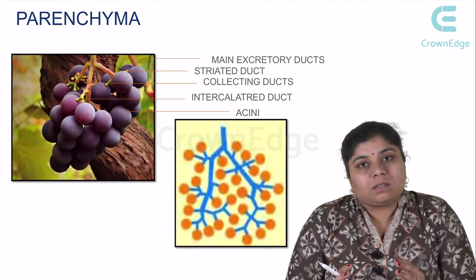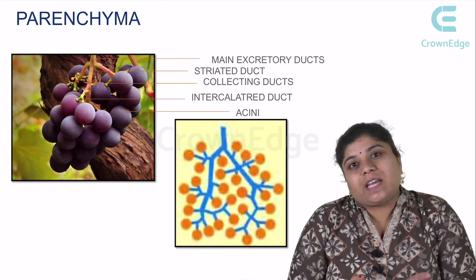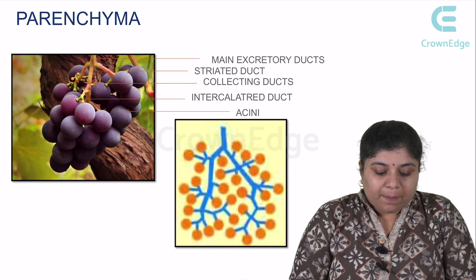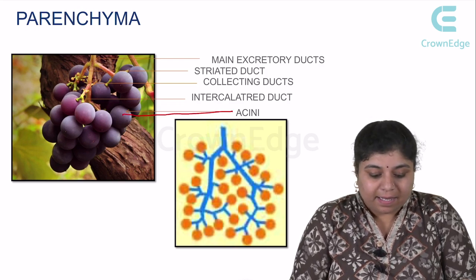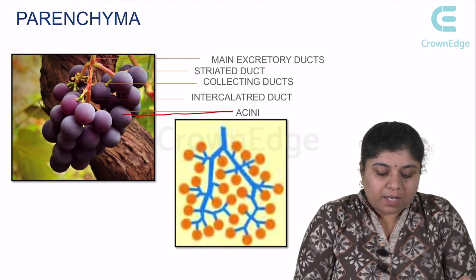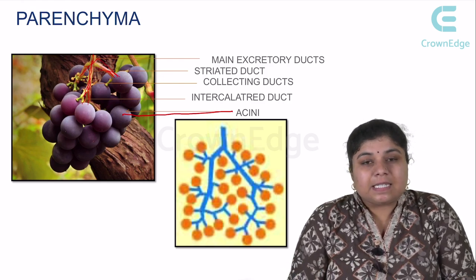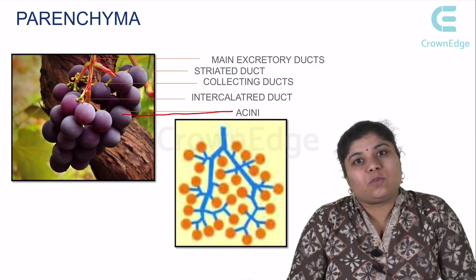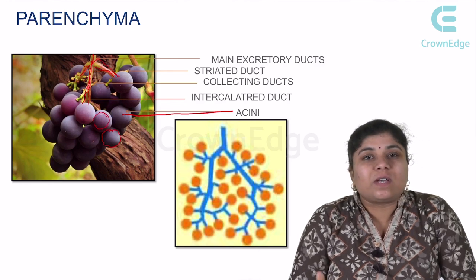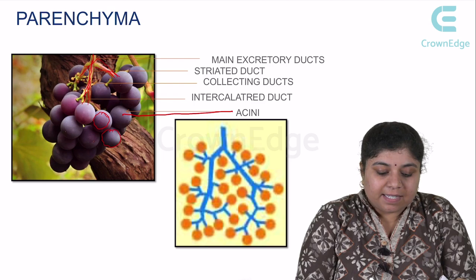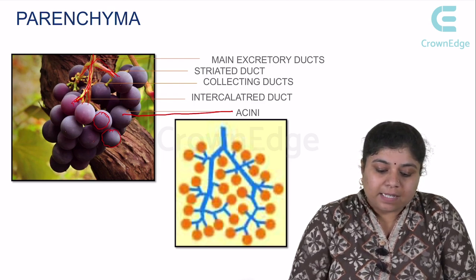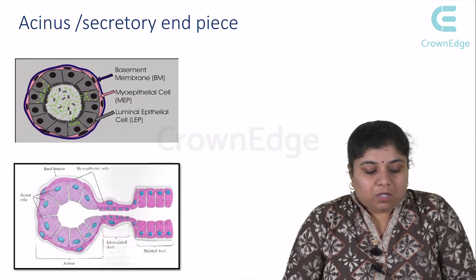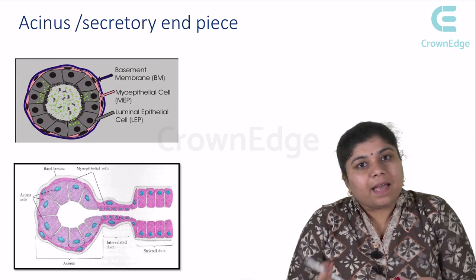To understand the structure of a salivary gland, it's easy to compare it to a bunch of grapes. The grape part is comparable to the acini, and the branches correspond to the ductal system. The secretion first moves into the intercalated duct, then into the striated ducts, and finally into the excretory ducts. So the parenchymal elements are the acini and the ductal system.